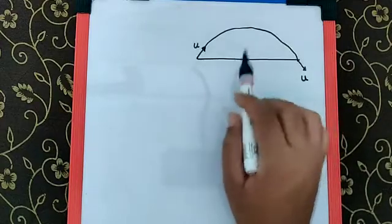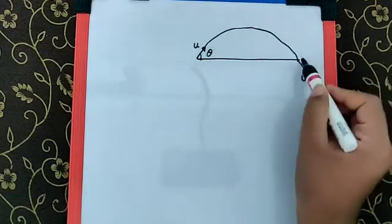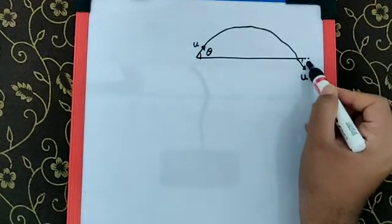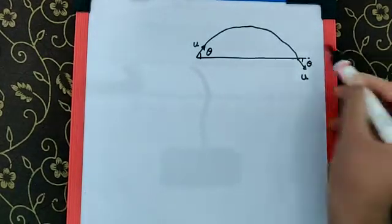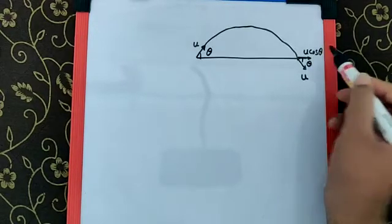We can say if this is theta, this is also going to be theta. So if we resolve the velocities, we are going to get this as u cos theta and vertically downward as u sine theta.